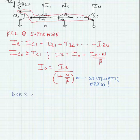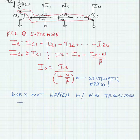We also note that this does not happen with a MOS current mirror. This is due to the infinite input impedance of DC.